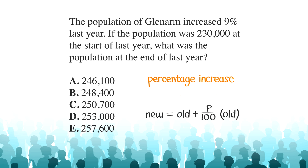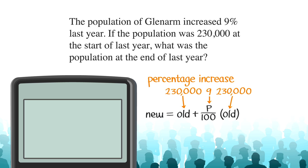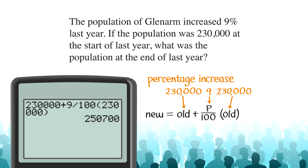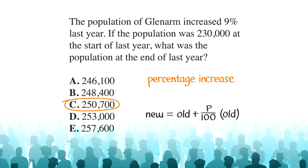The old value is 230,000 and the percentage increase is 9%. Using your calculator, input 230,000 plus 9 divided by 100 times 230,000. You get 250,700 for the population at the end of the year — that's choice C.